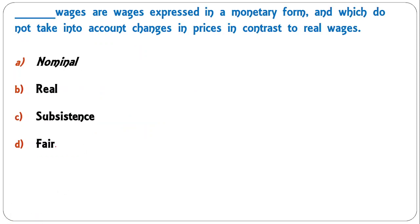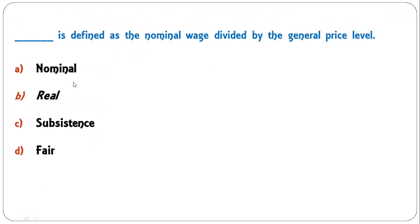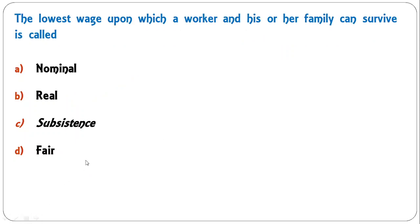Dash wages are wages expressed in monetary form and do not take into account changes in prices, in contrast to real wages. The answer is nominal wages — A is correct. Real wages are defined as nominal wage divided by the general price level — so B is the correct answer for that question.